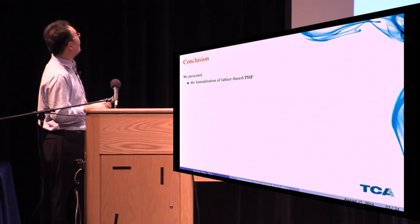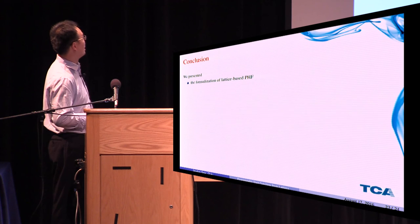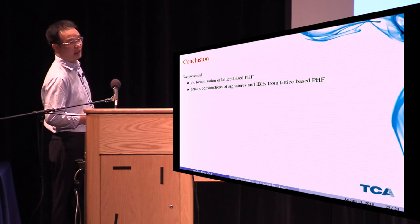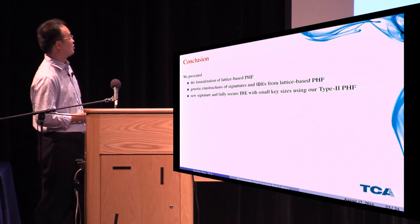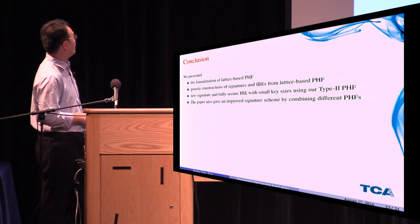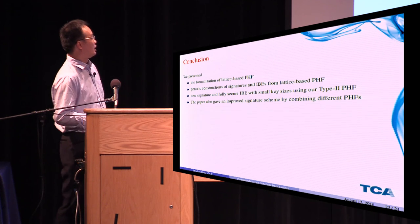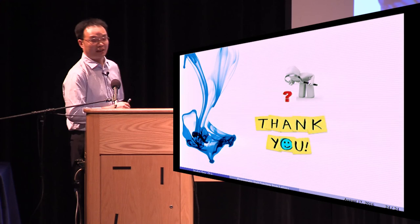OK, conclusion. We present a formalization of lattice-based PHF and give a generic construction of signature and IBE from lattice-based PHF. And we also present a new signature and a fully secure IBE with small key size using our Type 2 PHF. This paper also gave an improved signature scheme by combining different PHFs. OK, that's all. Thank you for your attention.